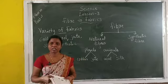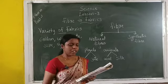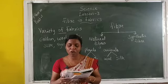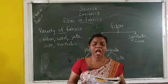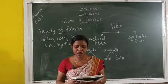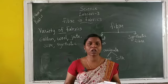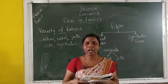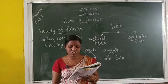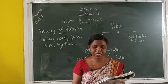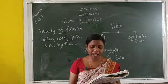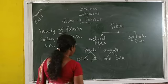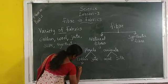Wool is obtained from the fleece — meaning hair — of sheep or goat. It is also obtained from the hair of rabbits, yaks, and camels. Silk fiber is drawn from the cocoon of the silkworm. Cotton is obtained from the cotton plant, and jute is obtained from the jute plant.